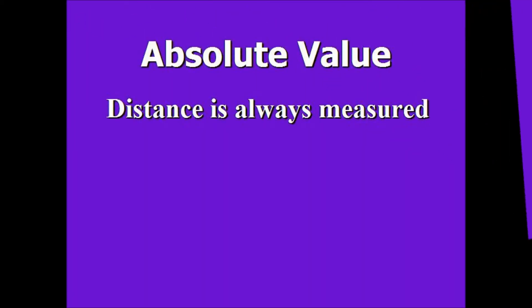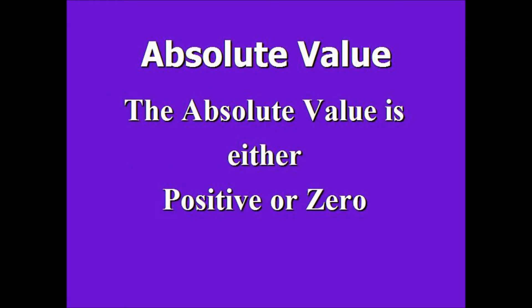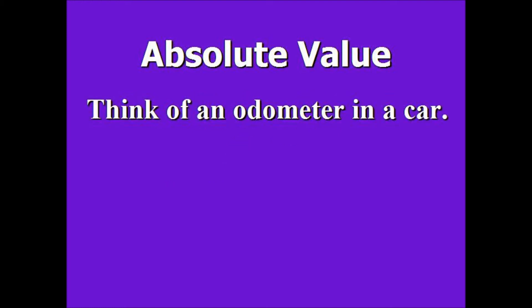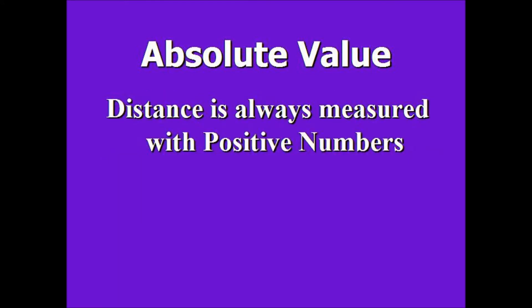Distance is always measured with positive numbers, or zero if you're not moving. So, the absolute value is either going to be positive or zero. Think of an odometer in a car — whether you're moving forward or backwards, it's always moving in positive numbers. Distance is always measured with positive numbers or zero if you're not moving at all.